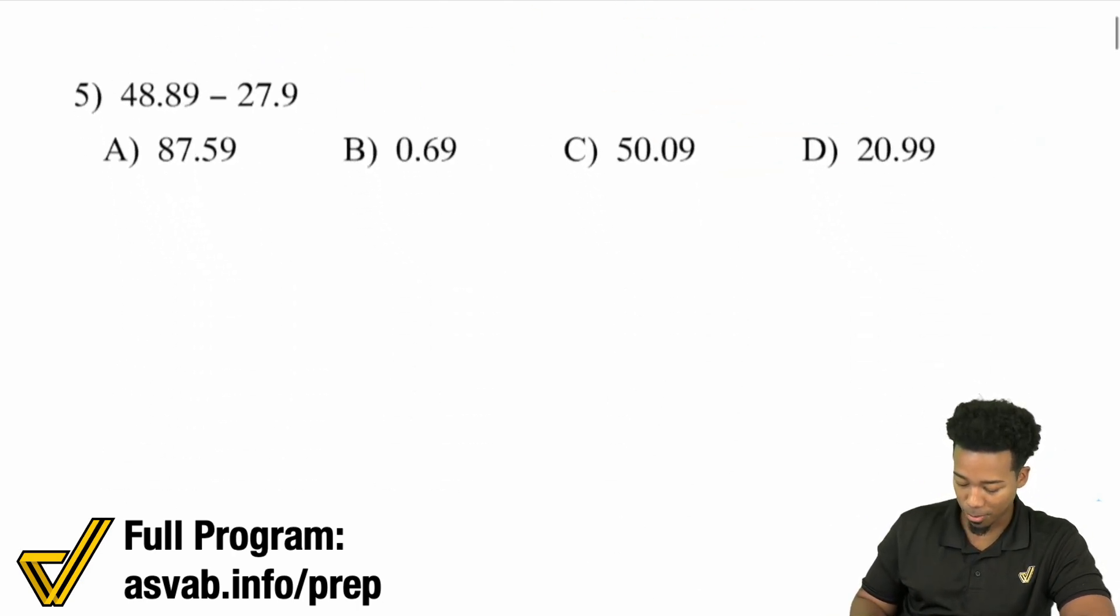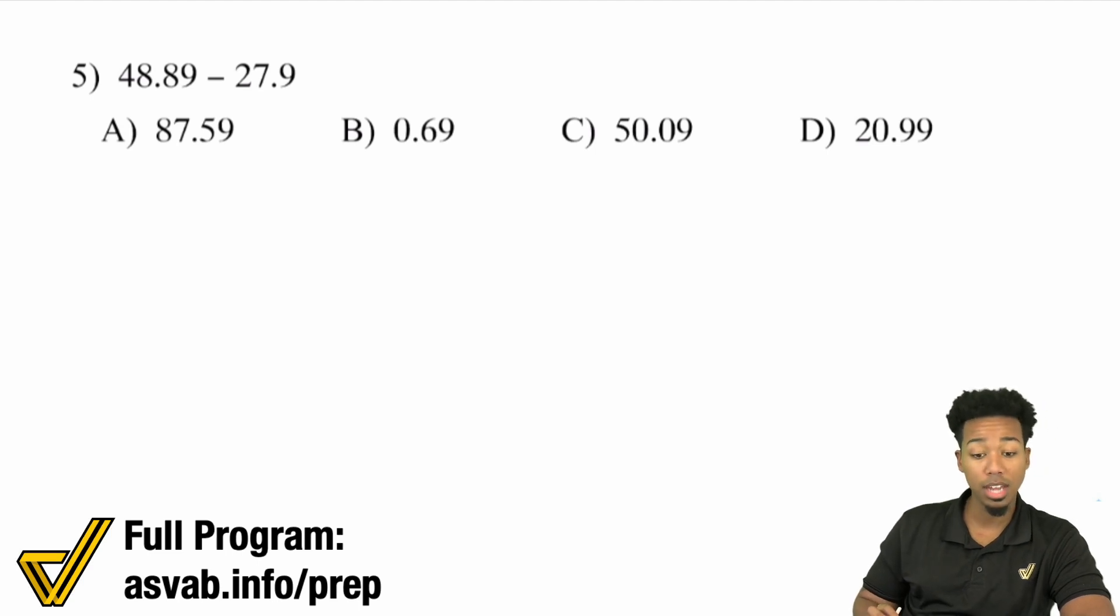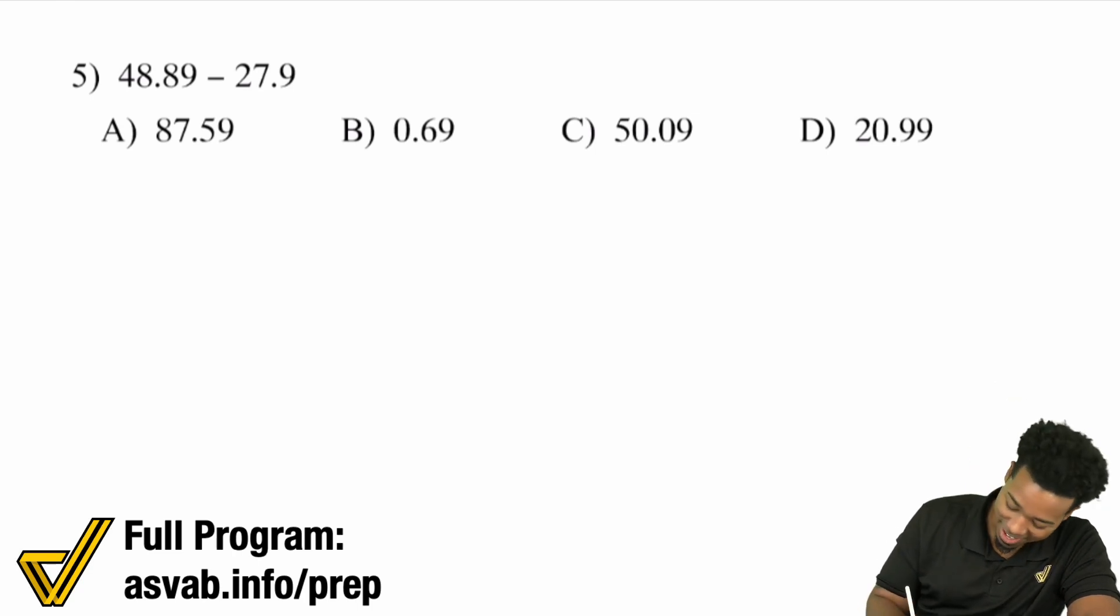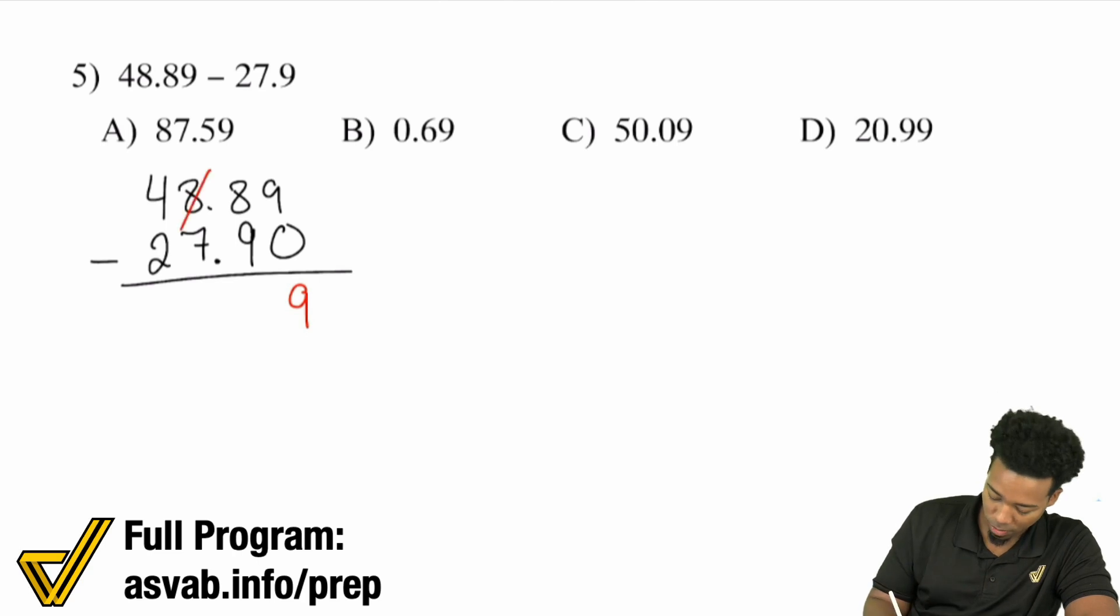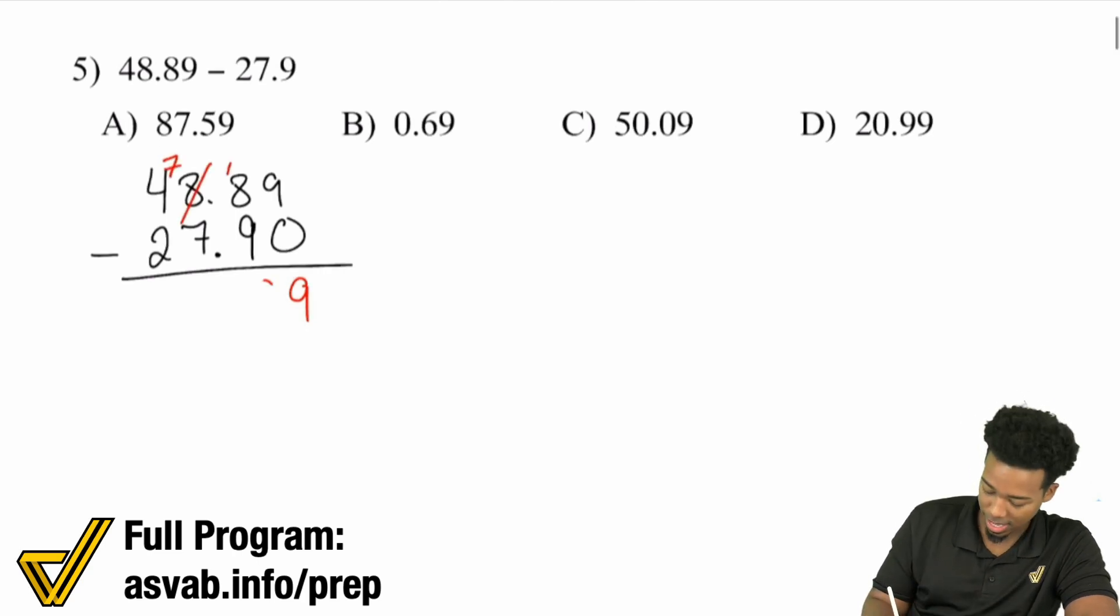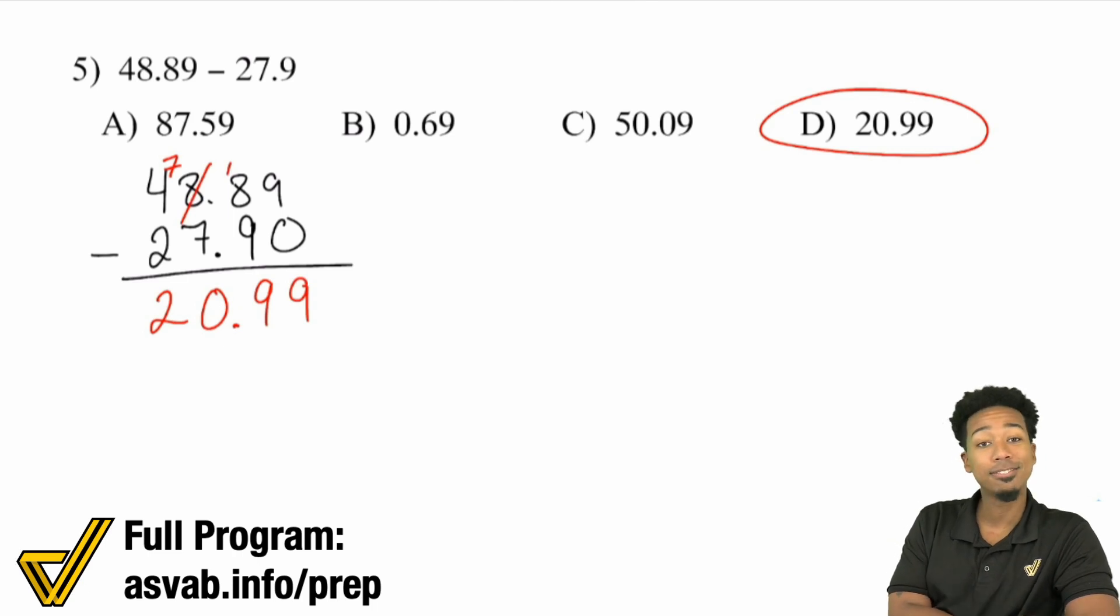And let's keep it going, my math party people. Let's take a look at subtraction here. We have 48.89. Minus 27.9. So just check it out right over here. 48.89 subtract and place everything in the same place value. 27 decimal 9. We have a zero right there and we're good. So let's go ahead and subtract now. We have 9 minus 0, which is 9. 8 minus 9 can't do that. So we have to go ahead and borrow. 18 minus 9 is 9. 7 minus 7 is 0. 4 minus 2 is 2. So we have 20.99 as the answer there. And that's D. Nice and easy.